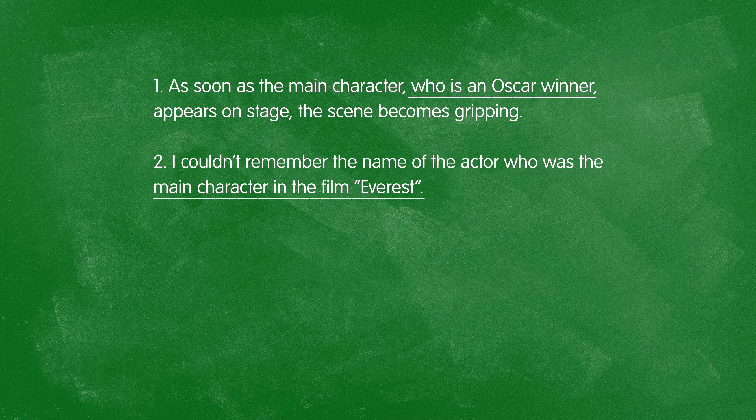For example: as soon as the main character, who is an Oscar winner, appears on stage, the scene becomes gripping. Here, we don't need to know that the main character is an Oscar winner. The only essential part is that as soon as he appears on stage, the scene becomes gripping. You can take that part out and the sentence still makes perfect sense.